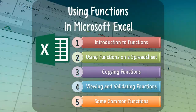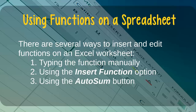Microsoft Excel provides us with many different ways of inserting or editing functions on a worksheet, including typing the function manually, using the Insert Function button, or using the AutoSum button. Regardless of which method we use, the first step in inserting a function on an Excel worksheet is to select the cell on the worksheet where we would like our output to appear.